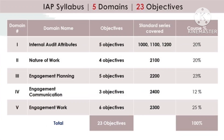Let's refresh ourselves with the overall IAP syllabus once again — the five domains, how many objectives there are — and then we'll start with Domain 2 specifically. We had the first domain covered already: Internal Audit Attributes, having five objectives and the 1000 standard series, covering 20% of the course. Today we are covering Nature of Work — four objectives, the 2100 series of standards.